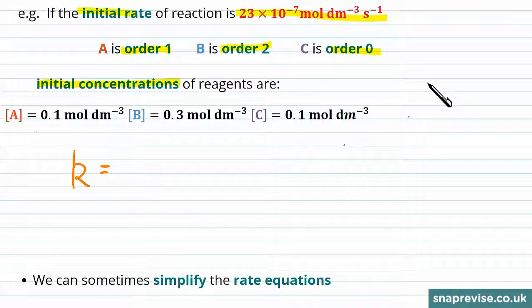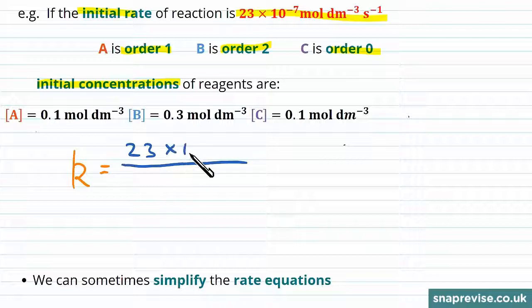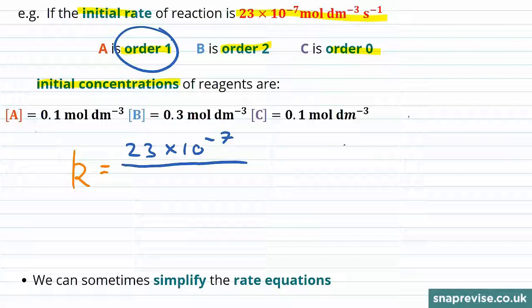So we take the rate and this is given to us in the question as 23 times 10 to the minus 7, and we're going to divide through by the concentrations raised to the power of their orders. So for reactant A, its concentration is 0.1 and its order is 1, so we're raising to the power of 1 here.